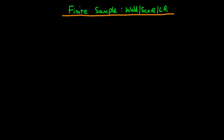In this video, I want to talk about the finite sample properties of the Wald statistic, score statistic, and likelihood ratio statistic. Implicitly, in the last few videos, we have actually spoken about the asymptotic distribution of each of these different test statistics. We said that the Wald statistic was, under H0 being true, chi-squared distributed with q degrees of freedom. But this only holds asymptotically.